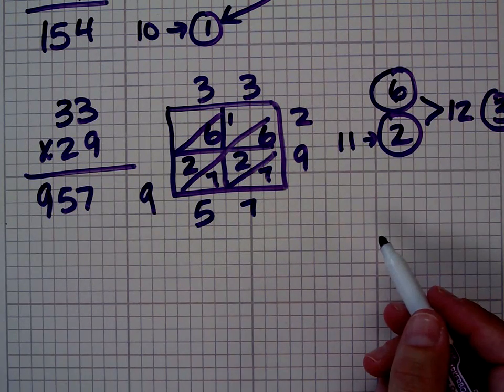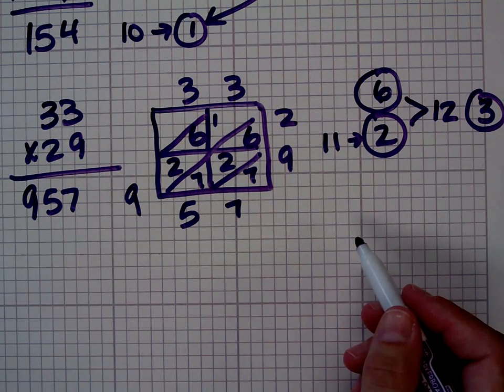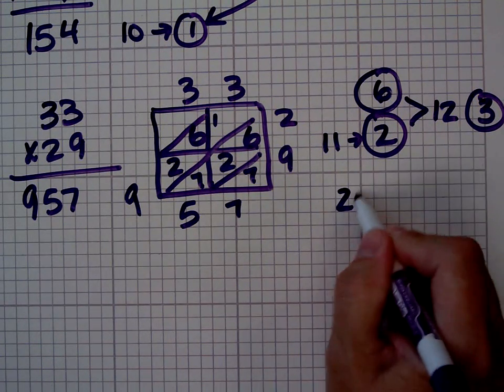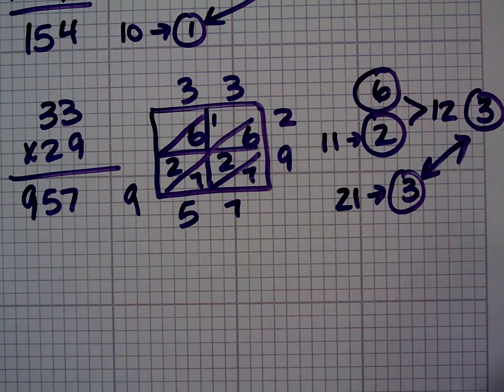957, 9 plus 5 is 14. 14, 14 plus 1, I'm sorry, 14 plus 7 is 21, and 2 plus 1 is 3. So the product of the digital roots is the same as the digital root of the product.